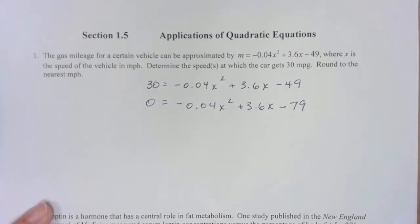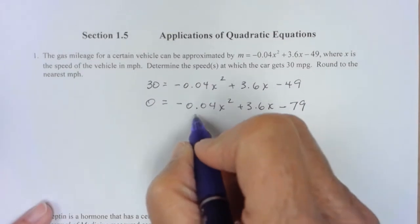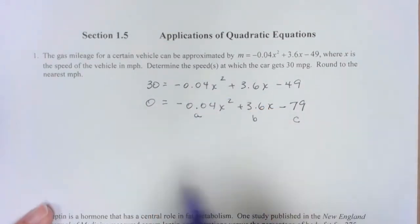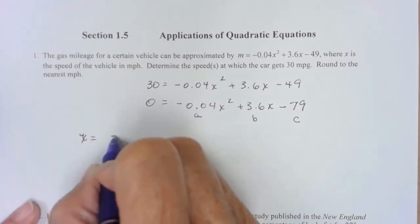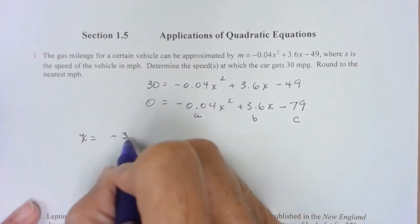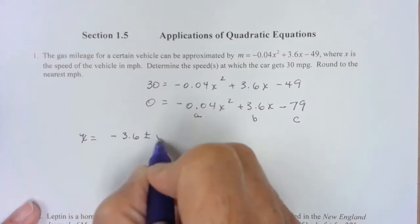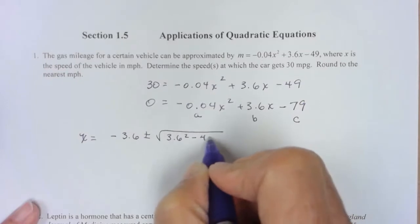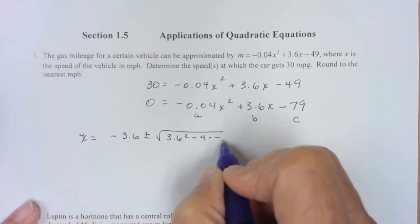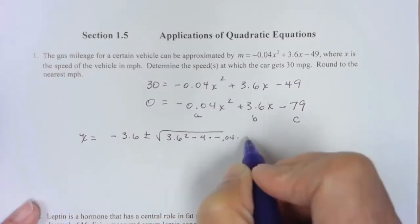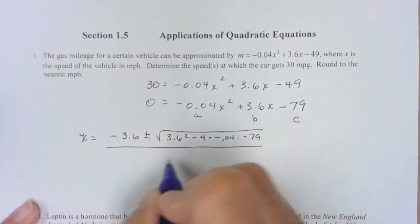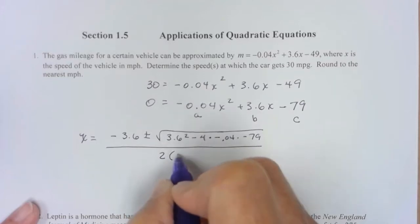Now I'm not even going to try and factor that. It looks rather semi-nasty. So I'm going to go for the quadratic formula. So this would be my a, my b, and my c. So x equals negative b plus or minus square root of b squared minus 4 times a times c, all over 2 times a.